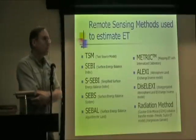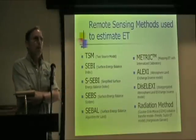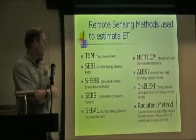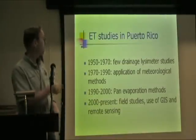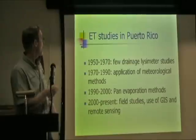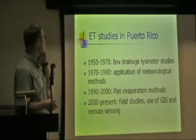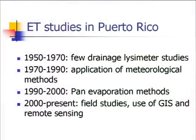Initially we can look at watershed-scale water budgets, and I'll show how we can use it at field scale as well. ET studies in Puerto Rico have a history: from the 1950s to the 1970s, drainage lysimeter studies were performed by sugar cane companies. They used drainage lysimeters because at that time the computer programs and meteorological methods that were developed later were not yet available.